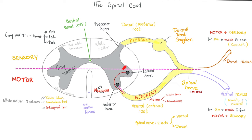In epidural or spinal anesthesia, where do we put the needle? To keep the spinal cord alive, keep the needle between L3 and L5. Between L3 and L5 we are in the lumbar area.